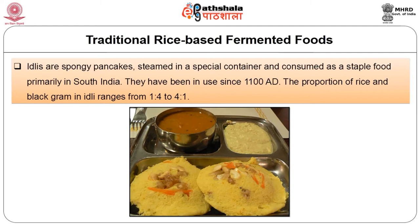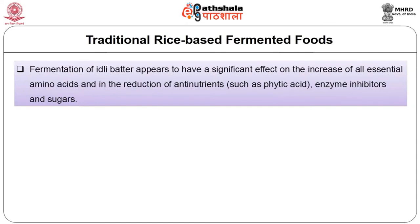Although Leuconostoc mesenteroides and Streptococcus fecalis are considered to be the microorganisms essential for leavening of the batter and for acid production in Idli, the yeasts Geotrichum candidum, Torulopsis holmii, Torulopsis candida and Trichosporon pullulans have also been identified in Idli fermentation. Fermentation of Idli batter appears to have a significant effect on the increase of all essential amino acids and in the reduction of anti-nutrients such as phytic acid, enzyme inhibitors and sugars. Idli is a low calorie, starchy and nutritious food consumed as breakfast or snack.